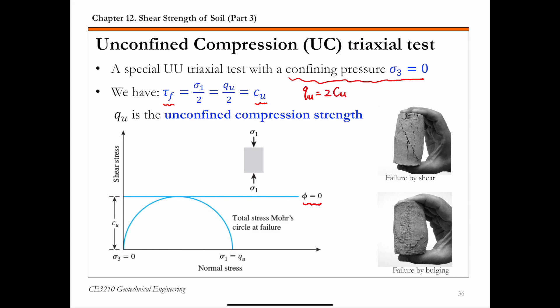In the UC test, QU equals the diameter of the Mohr circle, and also equals the axial stress — or major principal stress sigma 1 — at failure. Shown on this slide are two pictures of soil specimens failed in an unconfined compression triaxial test. The top one is a specimen failure by shear, where you can clearly see the inclined shear plane. The bottom one is specimen failure by bulging, where there's no unique shear plane and you can notice the expansion or bulging of the soil specimen, with some weaker planes experiencing excessive shear deformations.